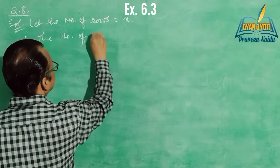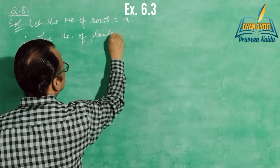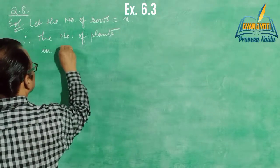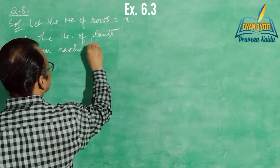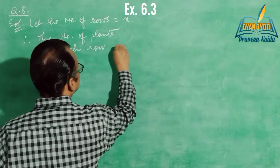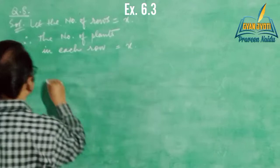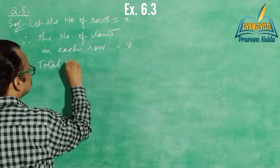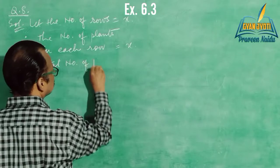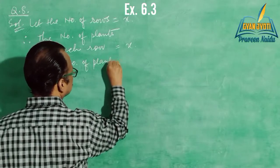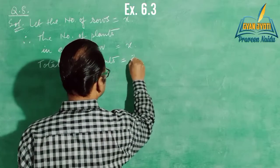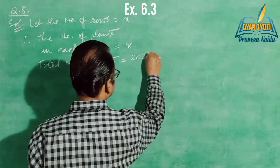Therefore the number of plants in each row will also be x. According to the problem, total number of plants equal 2025.